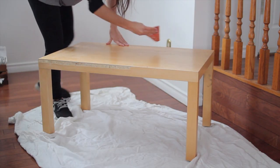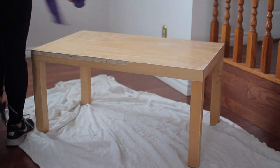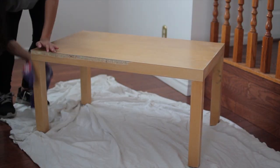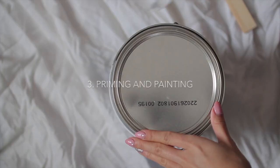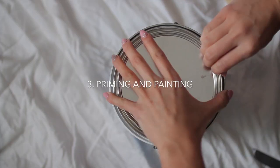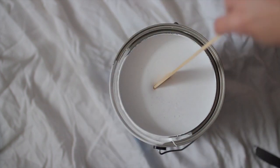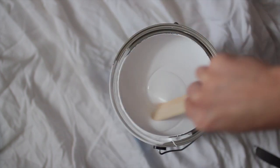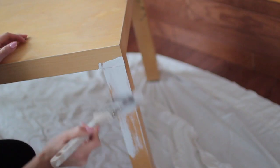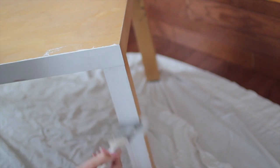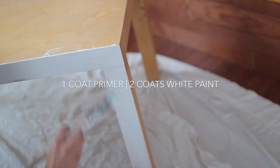After giving it a good sand, we're going to wipe off all of the debris. It's probably a good idea to vacuum around your space so that when you're painting, there's nothing that goes on your table. I've chosen a simple eggshell white, but you can definitely use any color that you want. After priming this with one coat, we're going to apply two coats of the white paint. Make sure you let each coat dry before applying the other ones.